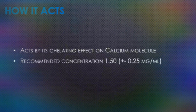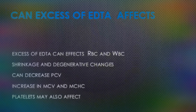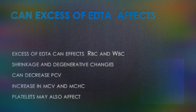There are drawbacks to EDTA when used in excessive amounts. Excess EDTA causes shrinkage and degenerative changes in both red cells and leukocytes. EDTA in excess of 2 mg per ml of blood may result in a significant decrease in packed cell volume and an increase in mean cell hemoglobin concentration (MCHC). Platelets are also affected; excess EDTA can cause swelling or disintegration of platelets.